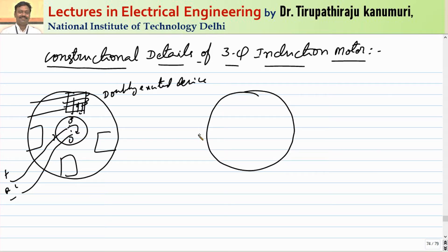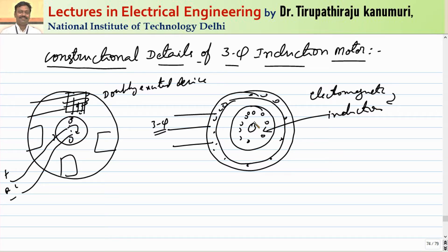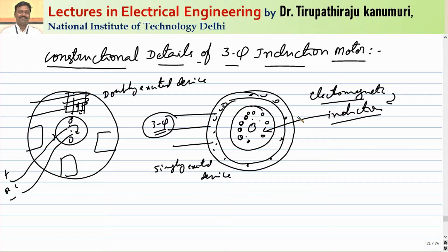In a three-phase induction motor, the stator has a distributed winding wound for three-phase supply. The rotor is not connected electrically — it only receives power from the stator based on the principle of electromagnetic induction. The EMF induced in the rotor produces a flux that interacts with the stator flux, thereby producing torque. Since only a single excitation is given, it is called a singly-excited device, and because torque is produced via induction, it is called an induction motor.